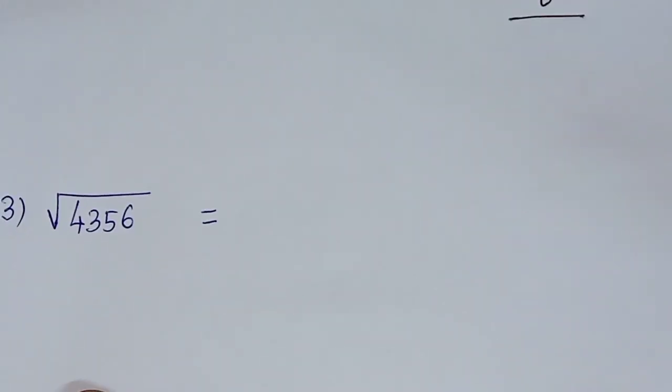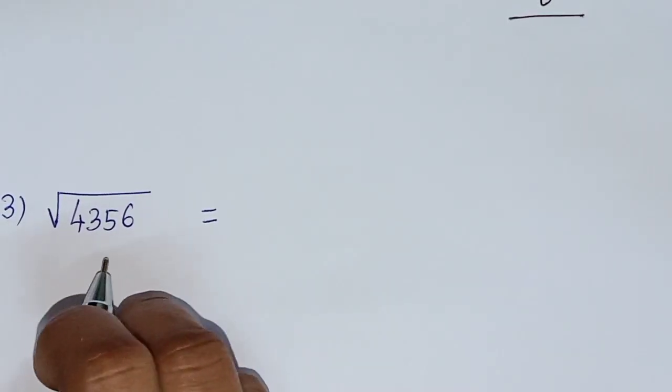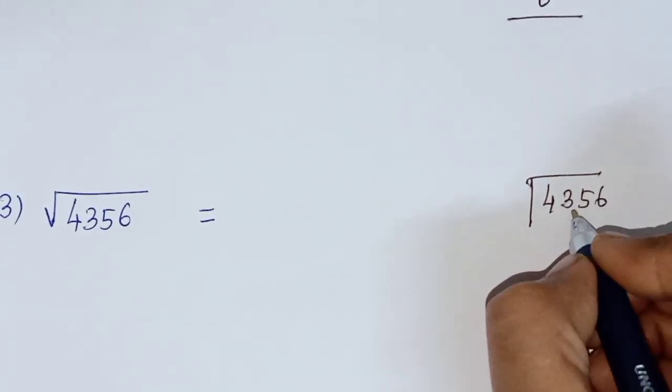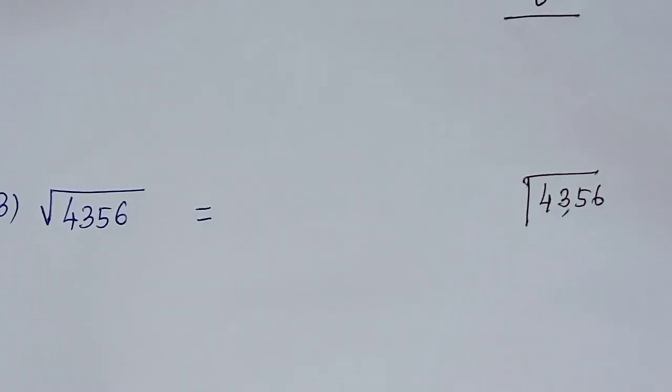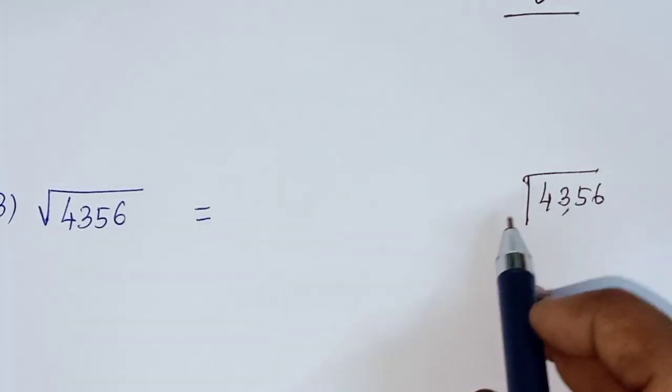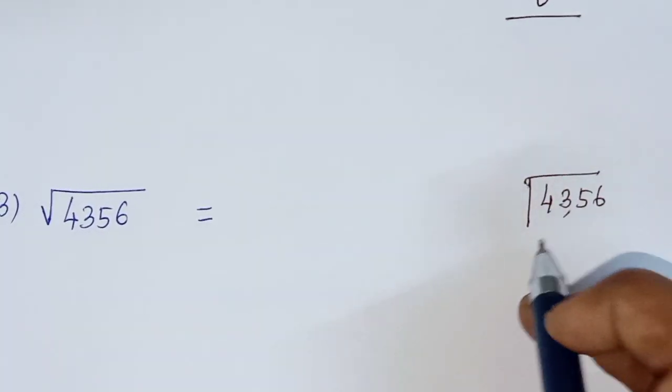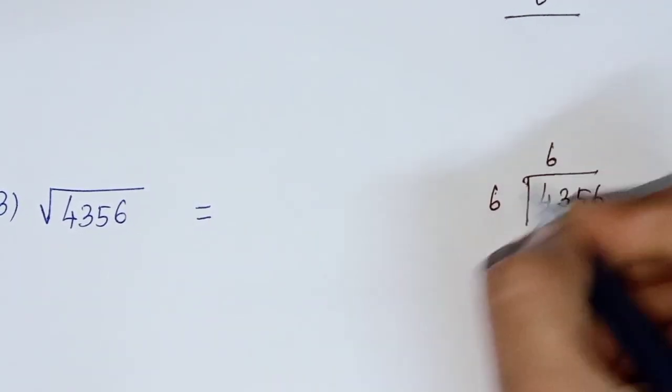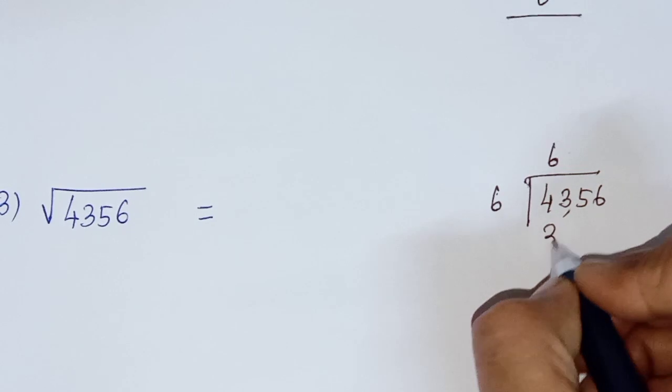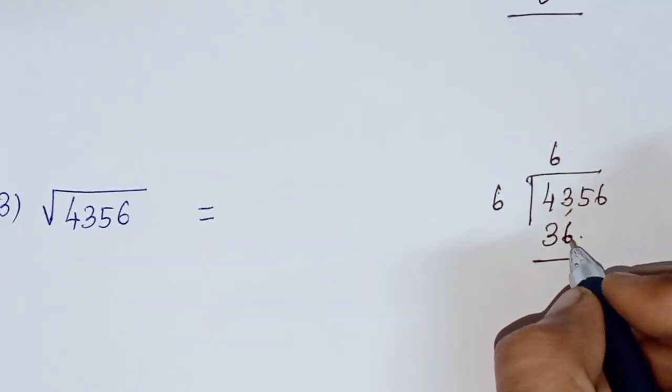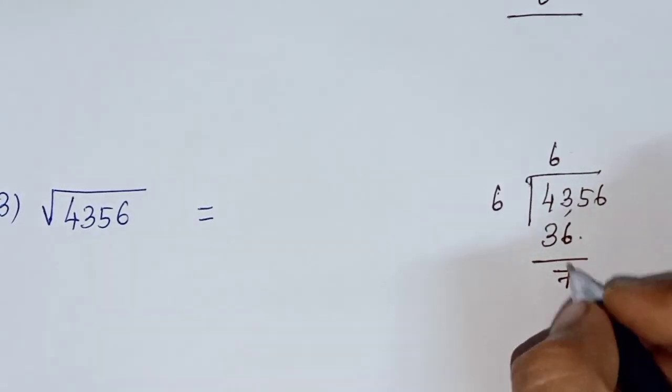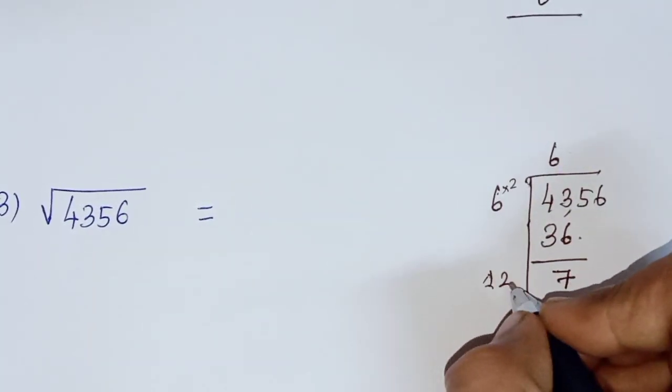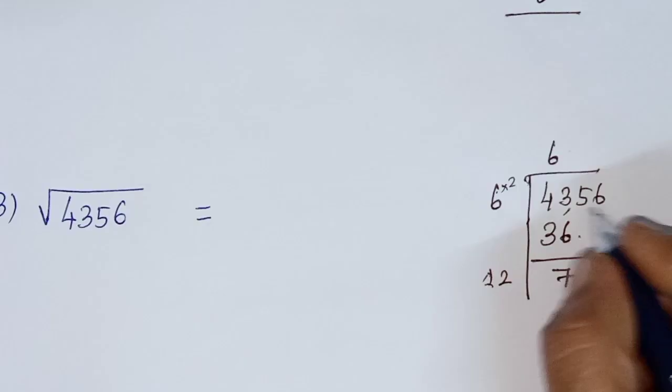And last one, square root of 4356. 4356. So 2 digits. 6, 6 are 36, 7, 6 are 49. So our first value, smallest digit, 6, 6 are 36. 43 minus 36, 7. Subtracting 7. So 6 are multiple, 2 are multiple, 12. 6 into 2, 12. So 56 will be applied.